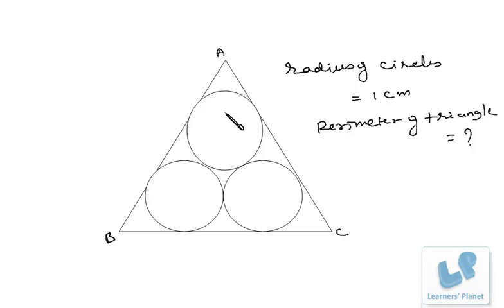Hello friends, here I am solving a query sent by a student. The triangle ABC is an equilateral triangle. The three circles inside this triangle have radius 1 cm and we have to find out the perimeter of this triangle. So precisely we have to find out the side of this equilateral triangle.